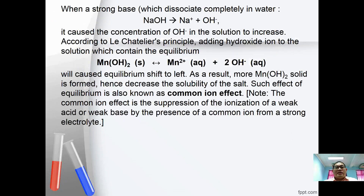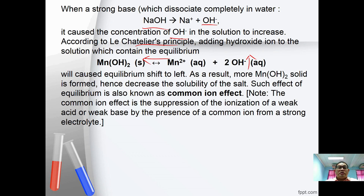How do we explain this phenomenon? When a strong base like NaOH dissociates completely to give Na⁺ and OH⁻, it causes [OH⁻] to increase. According to Le Chatelier's principle, adding OH⁻ shifts the equilibrium to the left, causing more Mn(OH)₂ solid to form, thus decreasing its solubility. This effect is called the common ion effect — the suppression of ionization of a weak acid or weak base by the presence of a common ion from a strong electrolyte.